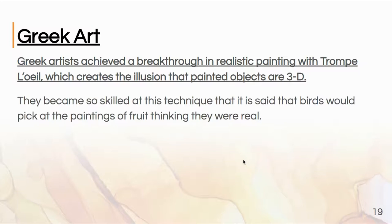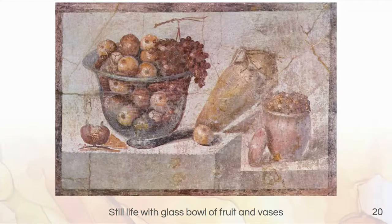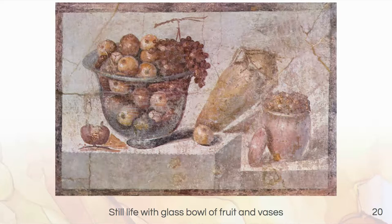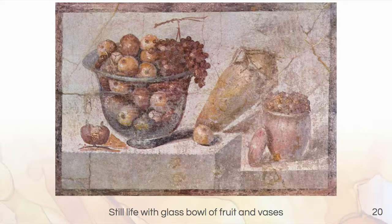Now we're moving on to Greek art. Greece created something called trompe l'oeil — the illusion that painted objects are three-dimensional — and they became masters of this. Here we have Still Life with a Glass Bowl of Fruit and Vases. Compare this to what we just looked at with Egyptian painting, which was very stylized and formulaic. This looks much more like what we think of as a still life painting, with implied three-dimensional form, interesting shadows and highlights. It almost feels as if you could reach out and pick one of those pomegranates out of the bowl.